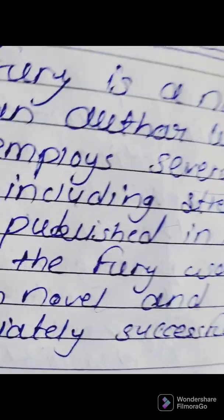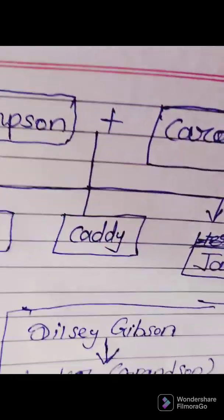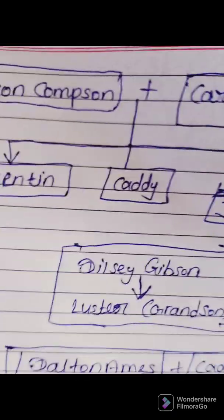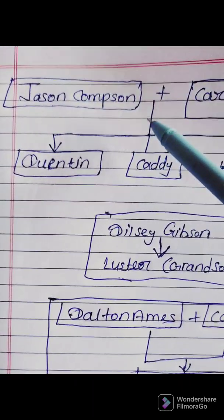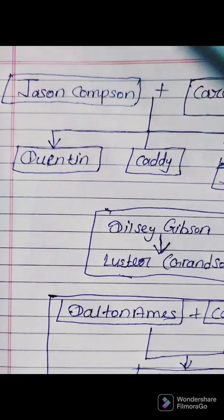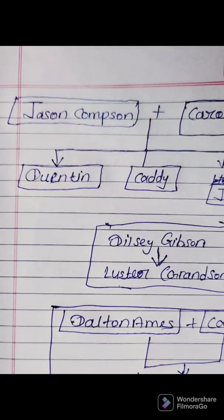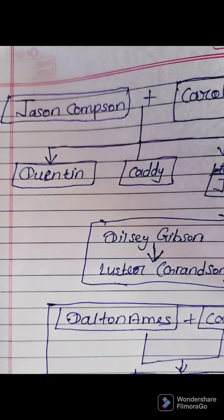Now we will discuss the story and its characters. The main character is Jason Compson. He is the head of the family and a gentleman.